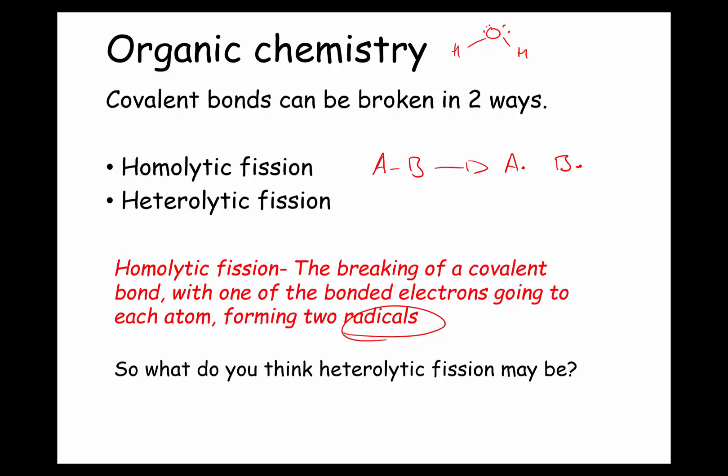So species AB is broken up into two radicals A and B. This is known as homolytic fission — each atom has an unpaired electron, hence 'homo'.